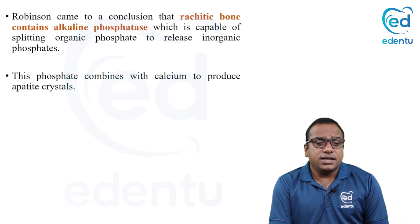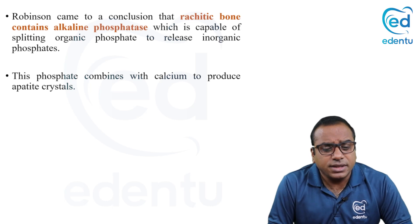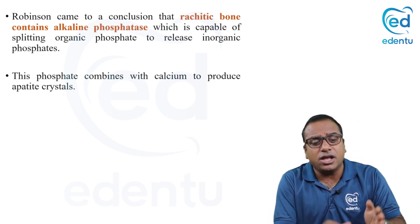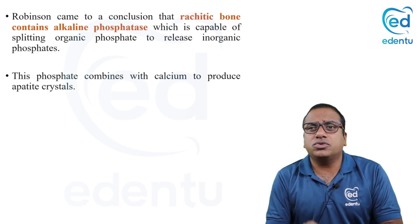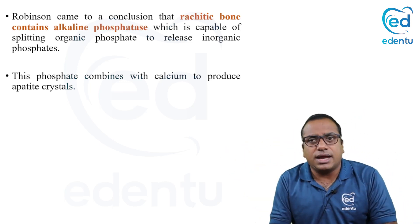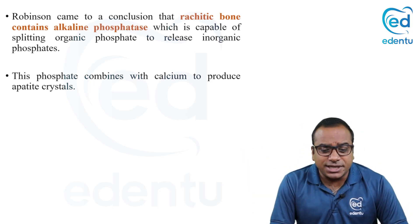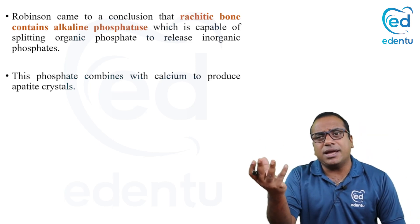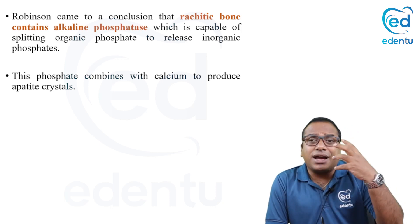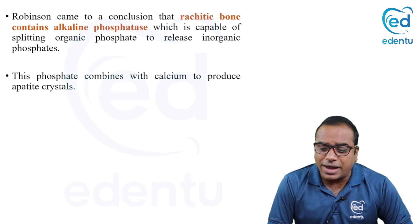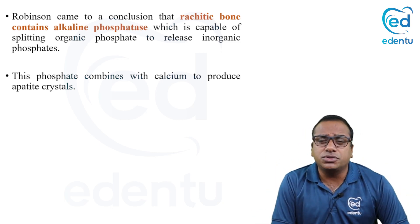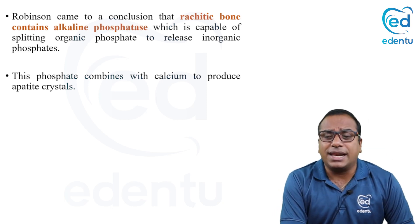Robinson concluded that alkaline phosphatase is present in rachitic bone and is capable of splitting organic phosphate to release inorganic phosphate — the boosting theory. He also observed that calcifying cartilage contains more alkaline phosphatase than non-calcifying cartilages. Alkaline phosphatase at alkaline pH can cleave phosphate ions from organic to inorganic form.